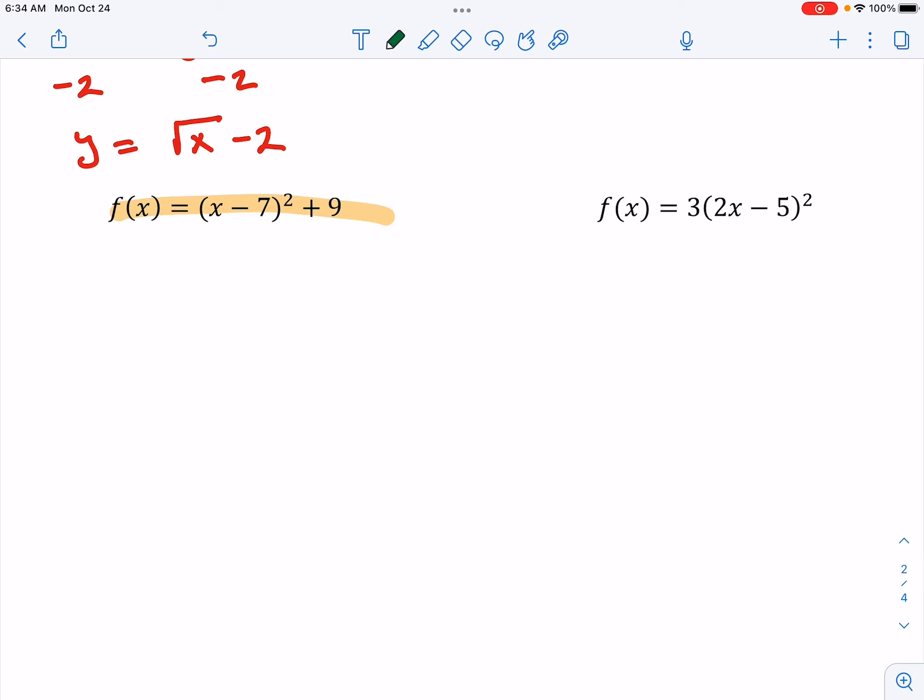The restriction on the domain. The restricted domain will be x values that are greater than or equal to 7. Just looking at this value in the parentheses, change the sign. That'll give us the right hand side of our parabola.